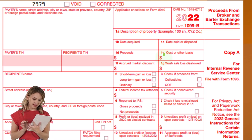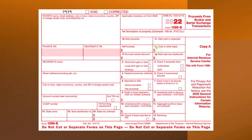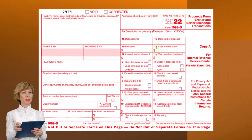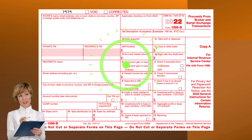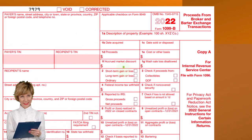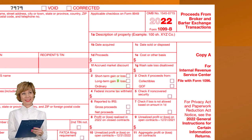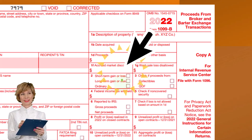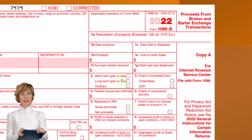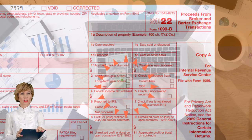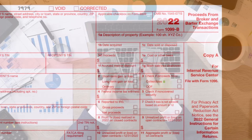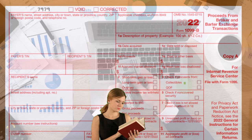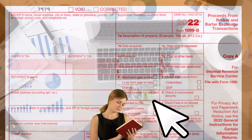You might enter transactions one by one into the system, or try to summarize short-term and long-term transactions and provide the detail to the IRS. Key fields include accrued market discount, wash sale, short-term gain or loss, and long-term gain or loss. Short-term and long-term will generally differ in tax treatment: short-term gains are typically subject to ordinary income rates, while long-term gains are subject to favorable capital gains rates.